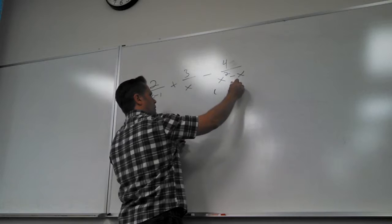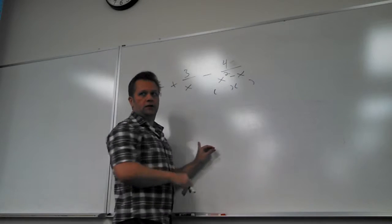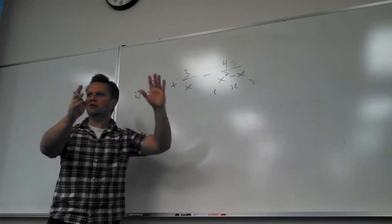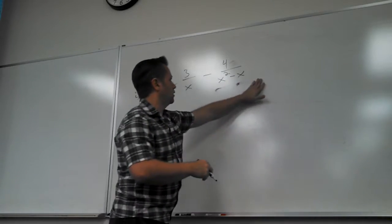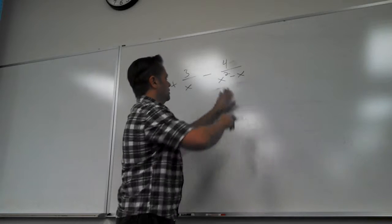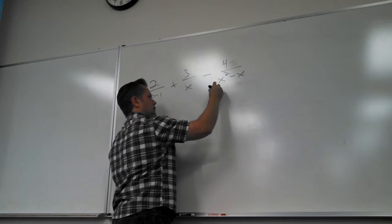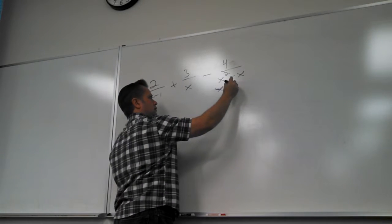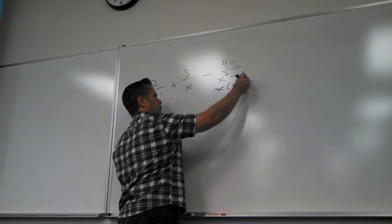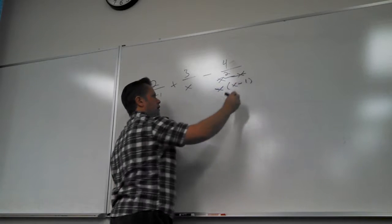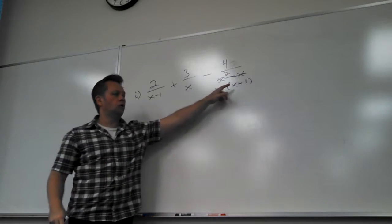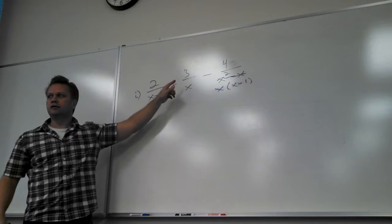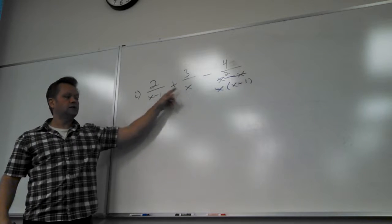This is the big mistake people make — they do this and their brain just starts throwing stuff in there. No, no, no. What kind of problem is this? X comes out. X minus one, X minus one. Those two parts are exactly what these other fractions have.